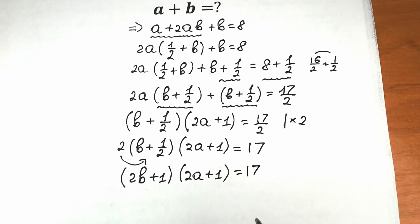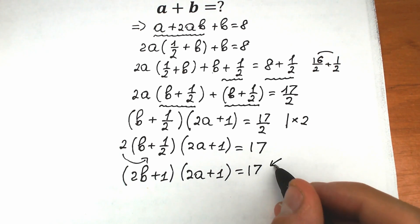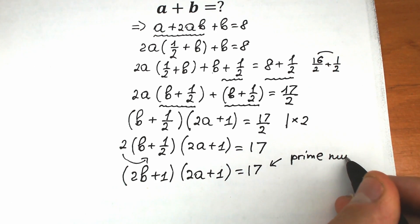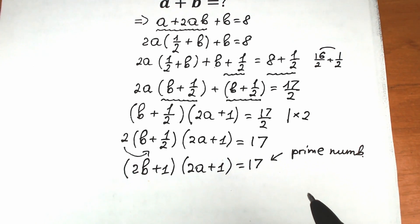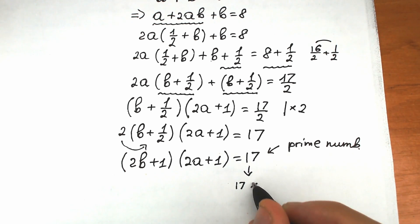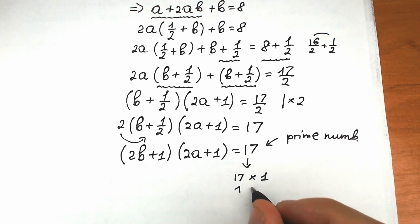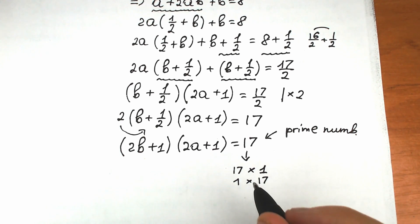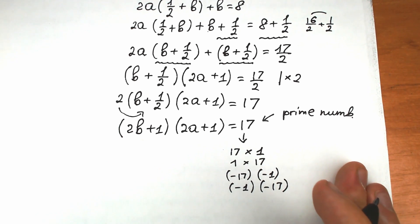Now here's a really interesting moment: we have a product of two values equal to 17, and 17 is a prime number. So it can only be expressed as: 17 times 1, or 1 times 17, or (−17) times (−1), or (−1) times (−17). Let's find every one of these cases.